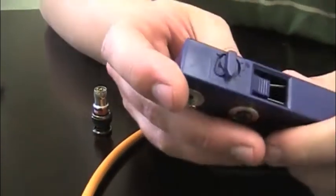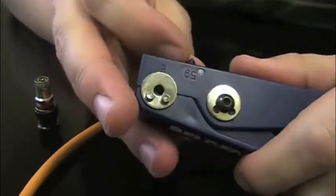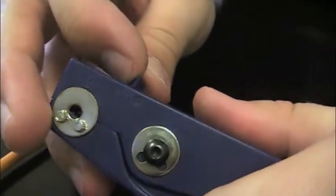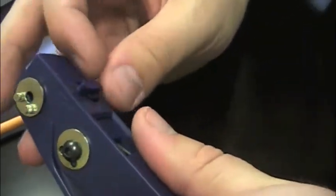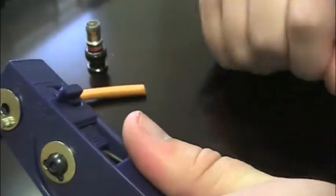On the bottom of this strip tool, you'll actually see there's a dial here to select between RG59 and RG6. We're doing RG59, so we'll leave it there.